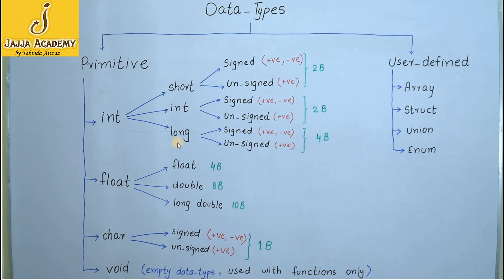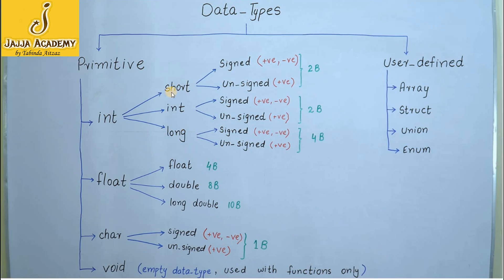Short int and all three subcategories are further divided into two categories: signed short and unsigned short. Signed short data type is used to store both positive and negative numeric values — positive whole numbers and negative whole numbers. Unsigned means only positive values can be stored; negative numeric values cannot be stored in an unsigned data type.